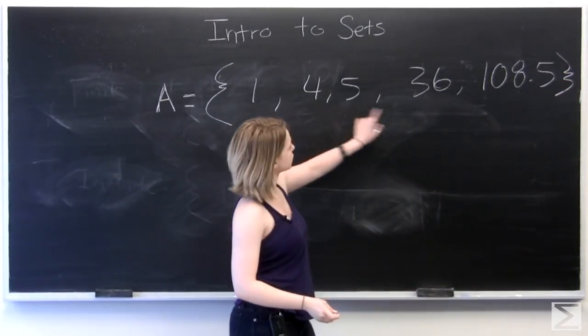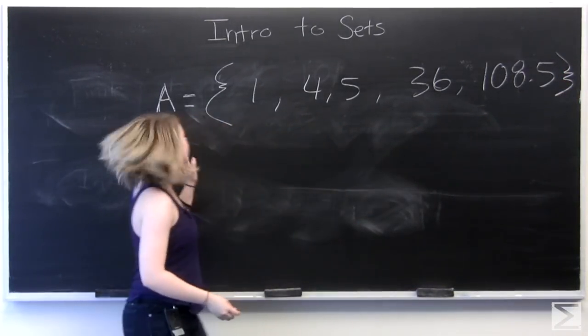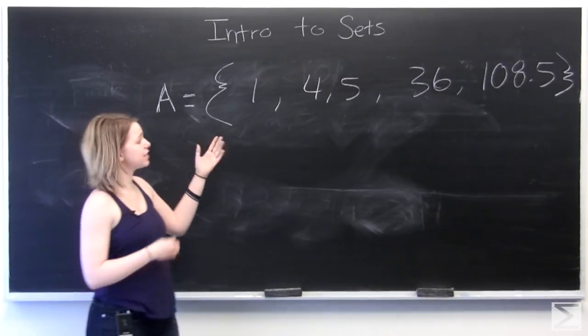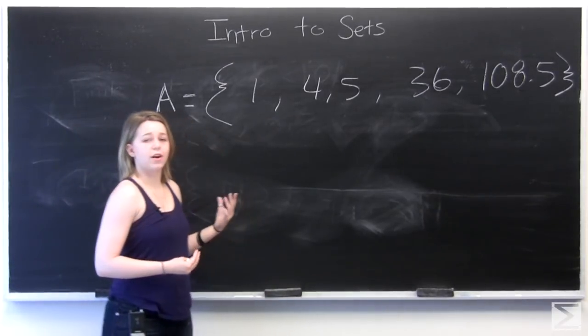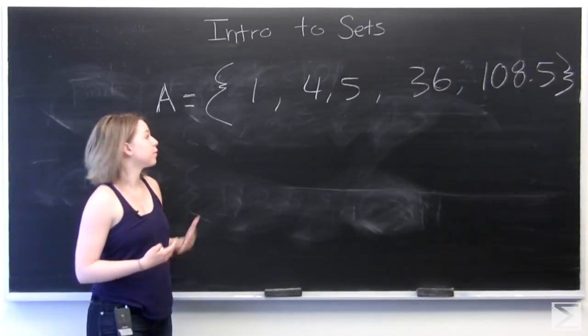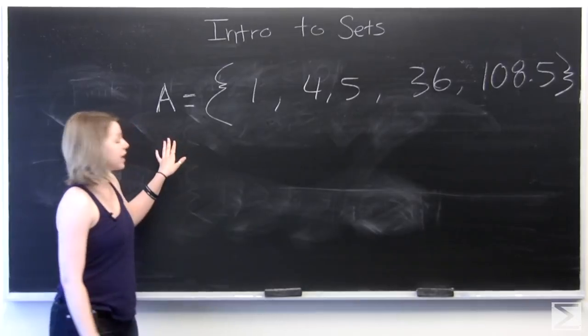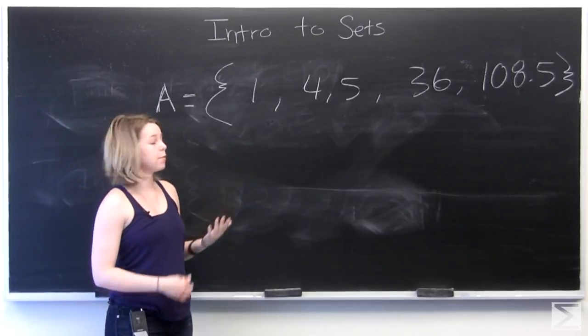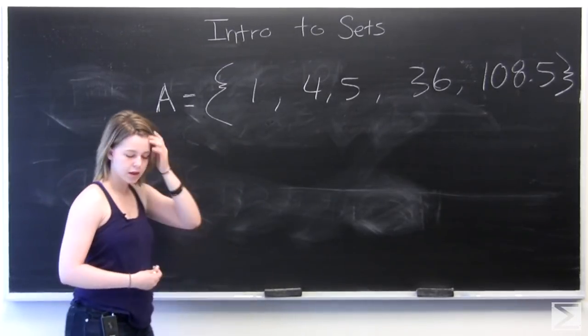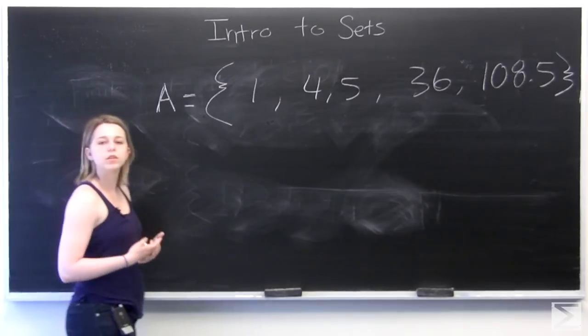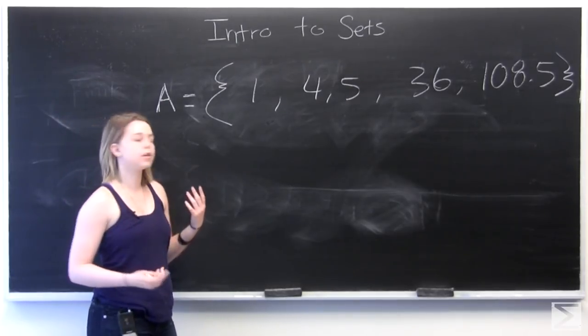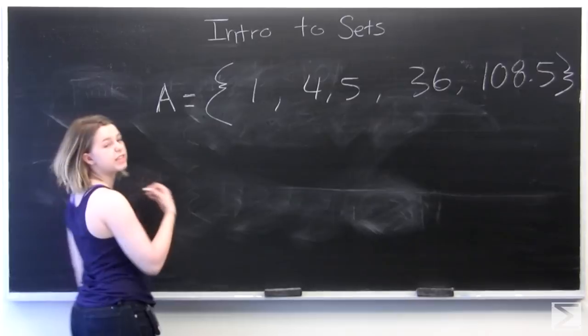So this set A of five numbers, these numbers don't really go together. They are defined and they go together because I've defined them to be in set A. That's why these are a set, even though the numbers don't have anything to do with each other. And so now let's introduce another notation for sets.